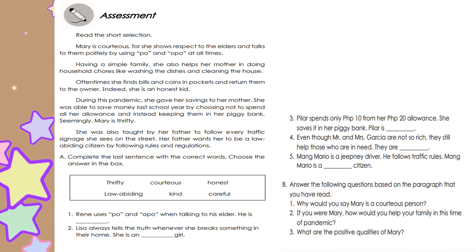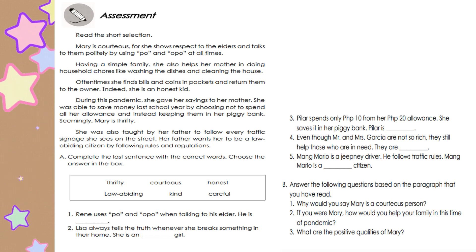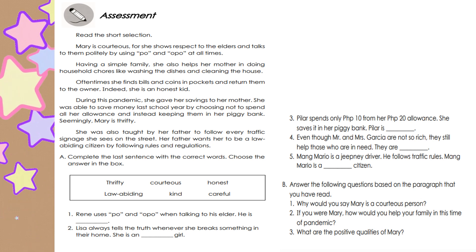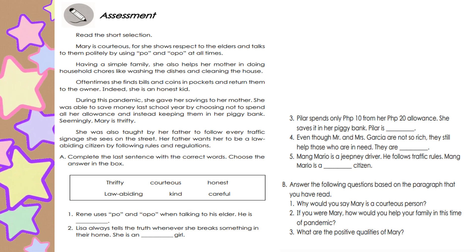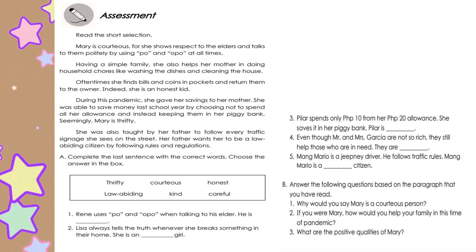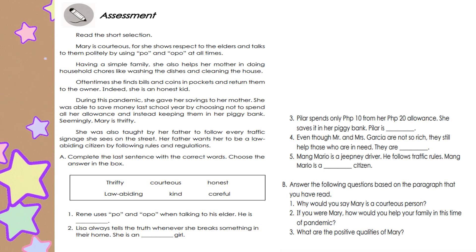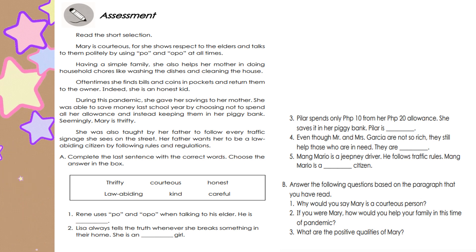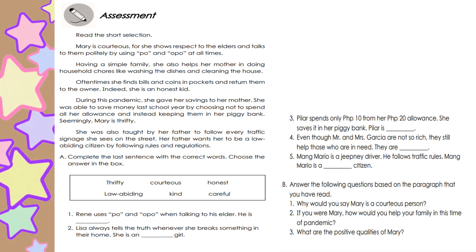Now, let us complete the last sentence with the correct words. Choose the answer in the box. The choices are: thrifty, courteous, honest, law-abiding, kind, and careful. 1. Rene uses po and opo when talking to his elder. He is blank. 2. Lisa always tells the truth whenever she breaks something in their home. She is a blank girl. 3. Pilar spends only 10 pesos from her 20 pesos allowance and saves it in her piggy bank. Pilar is blank. 4. Even though Mr. and Mrs. Garcia are not so rich, they still help those who are in need. They are blank. 5. Mang Mario is a jeepney driver. He follows traffic rules. Mang Mario is a blank citizen.